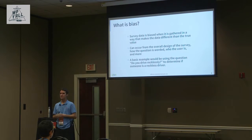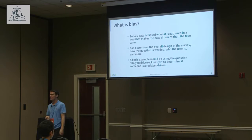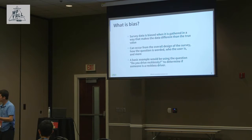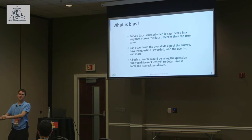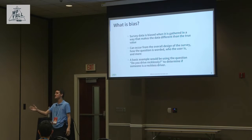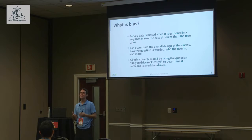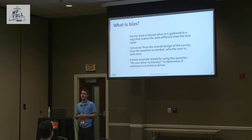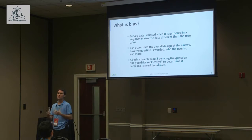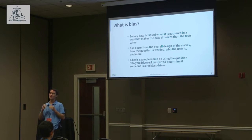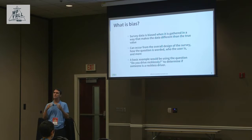A simple example: if you ask someone 'Do you drive recklessly?', no one is going to say yes. Instead, you might ask something more factual like 'How many speeding tickets have you had in the last two years?' That phrasing won't prompt someone to think 'Oh no, I'm not a reckless driver.' This is a basic example of how bias can arise from question wording.